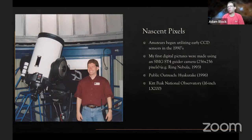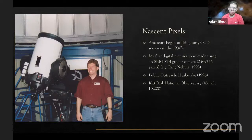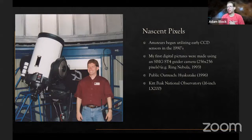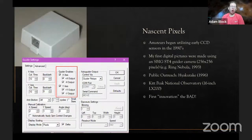That was my beginnings in digital astrophotography, continued with my work at Kitt Peak National Observatory. This is the 16-inch LX200 that I used to develop those initial programs for the Visitor Center. This is a great telescope if you're going to look through it — it's a terrible telescope if you want to take a picture with it. But that didn't stop me; I didn't know any better. I began what is basically an astrophotography program as part of these outreach experiences.